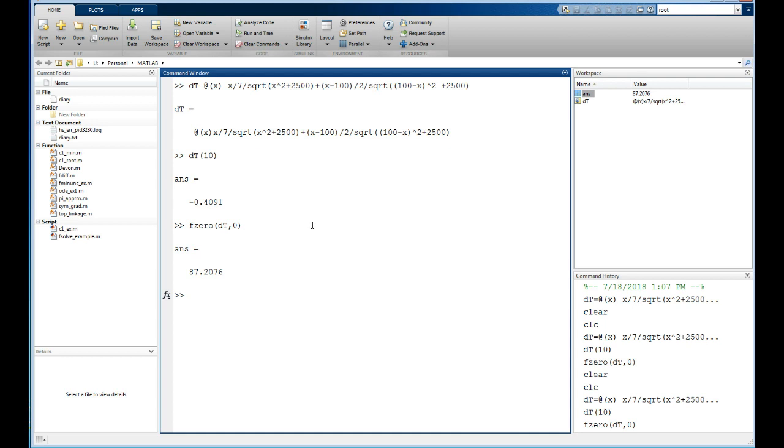And there you have it. In this series of three videos, we've set the derivative of the objective function equal to zero. We've shown how to find that derivative analytically. We've solved the problem in MathCAD. And now we've solved it in MATLAB.